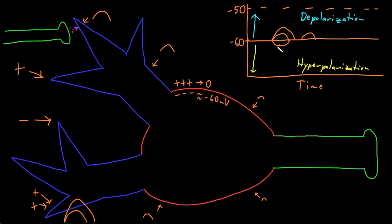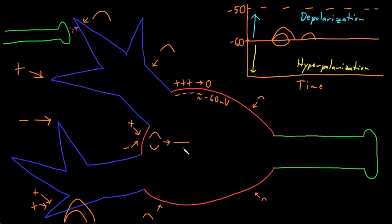The same is true for hyperpolarizations — you can have temporal and spatial summation of hyperpolarizations to get larger hyperpolarizations. If you had an excitatory input and an inhibitory input at the same time and place, instead of getting both a depolarization and a hyperpolarization, they may cancel each other out, leaving the membrane potential at the resting potential.